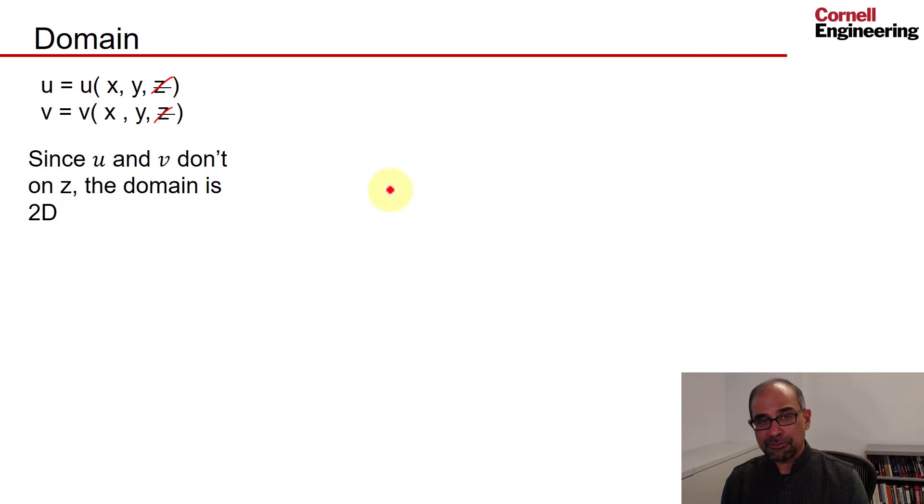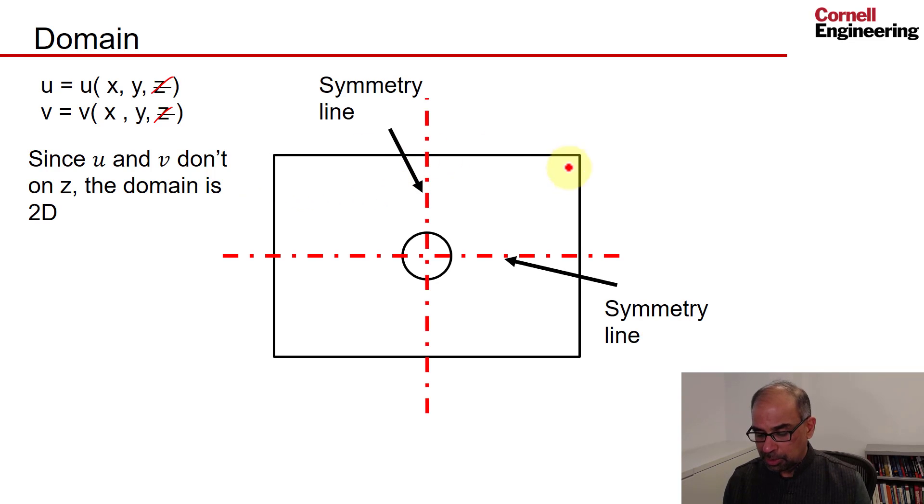And then you can further reduce the domain through symmetry. So if I go to the plate with a hole, I see that that's a symmetry line and that's a symmetry line. This means that I can do one-fourth of the plate, which I've highlighted in yellow. So that's my domain.